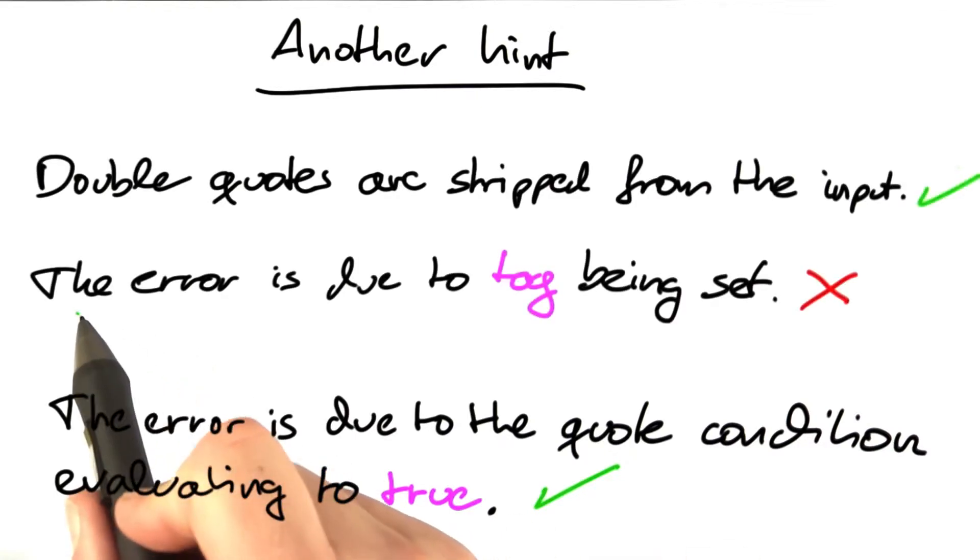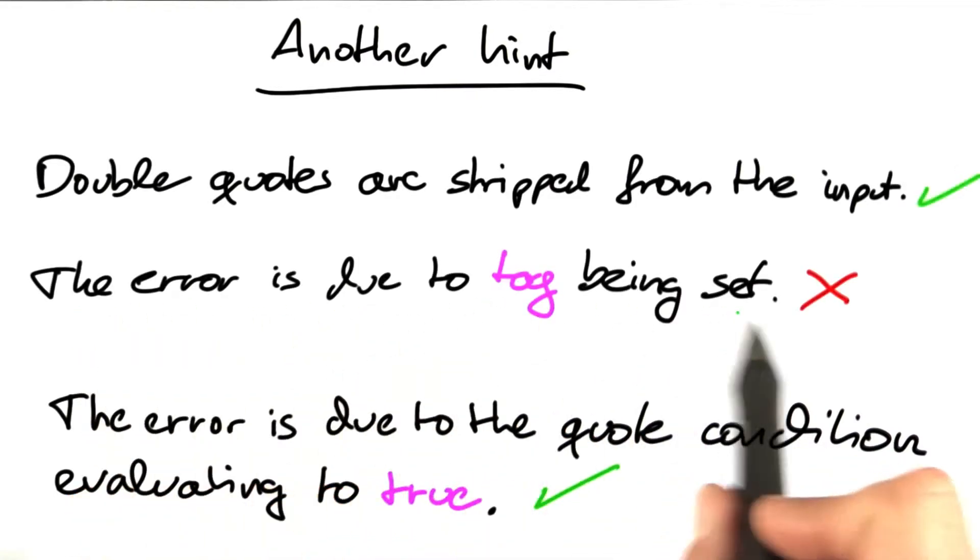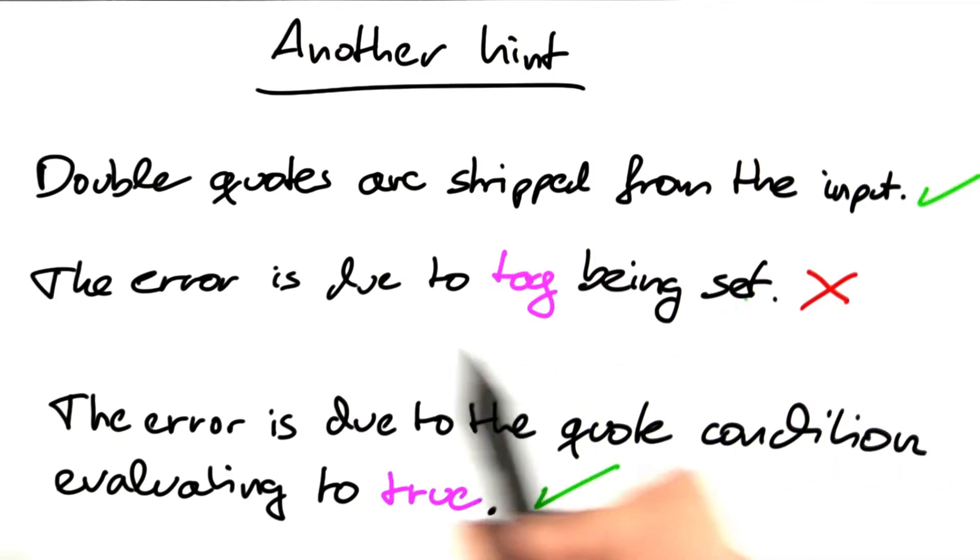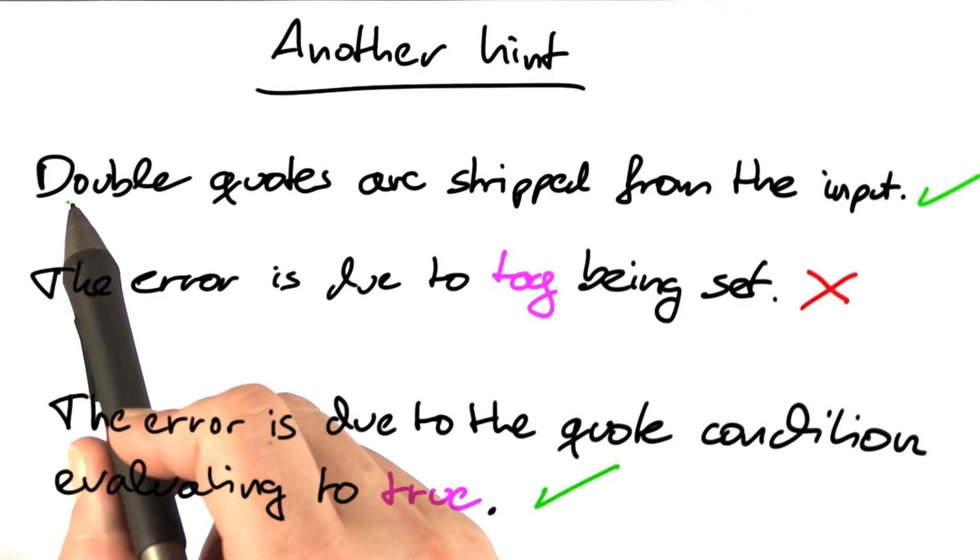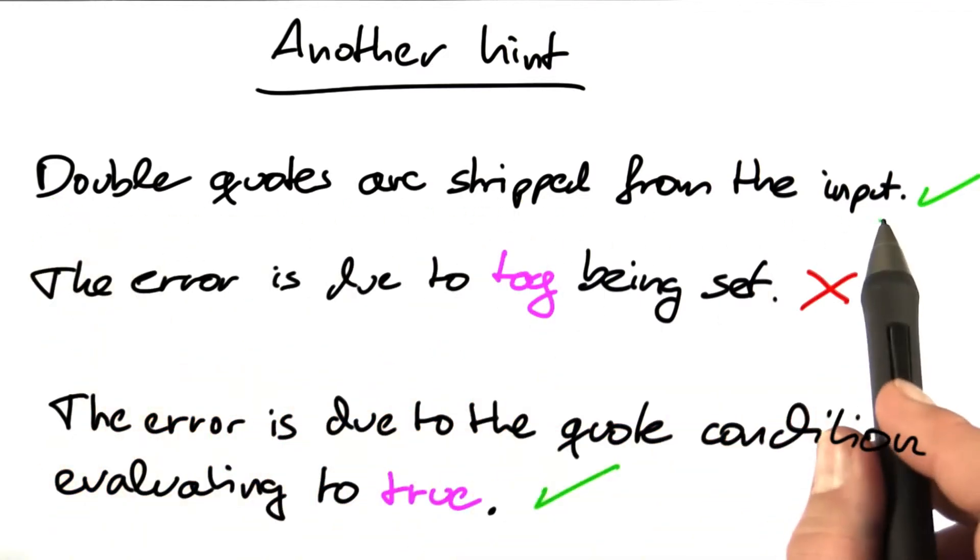Before, we already had seen that the error is due to tag being set was rejected—that is, tag is not being set. Our initial hypothesis and initial observation: double quotes are stripped from the input.